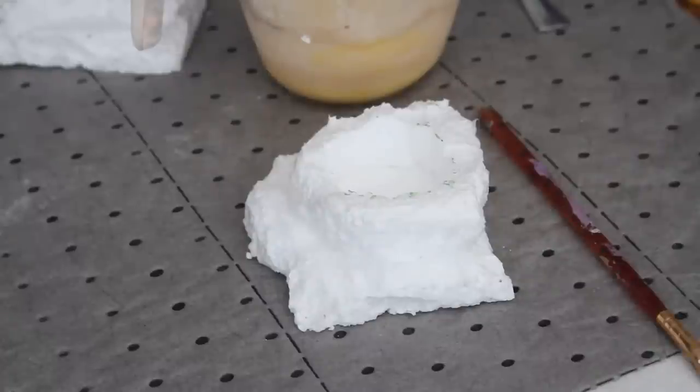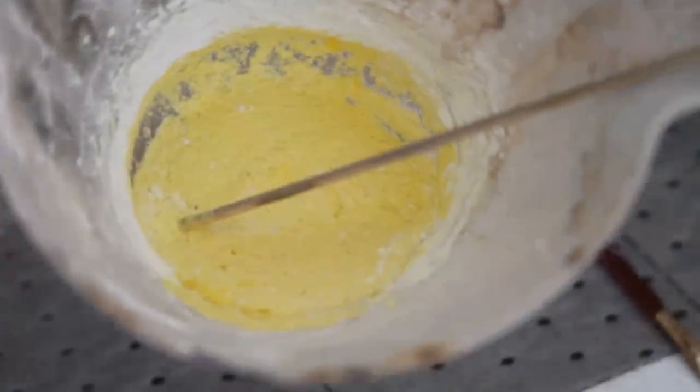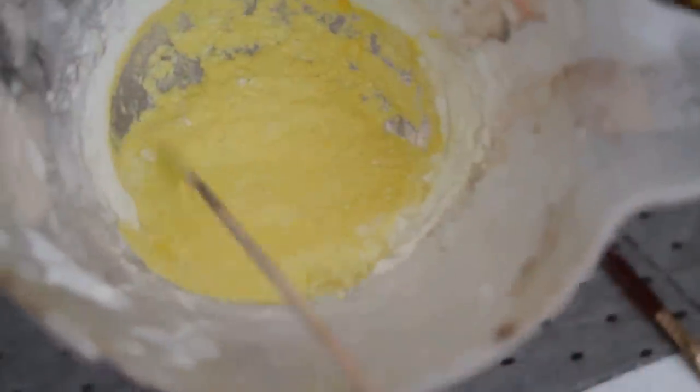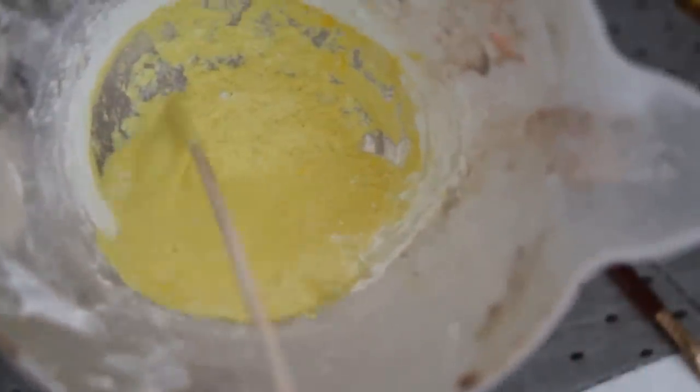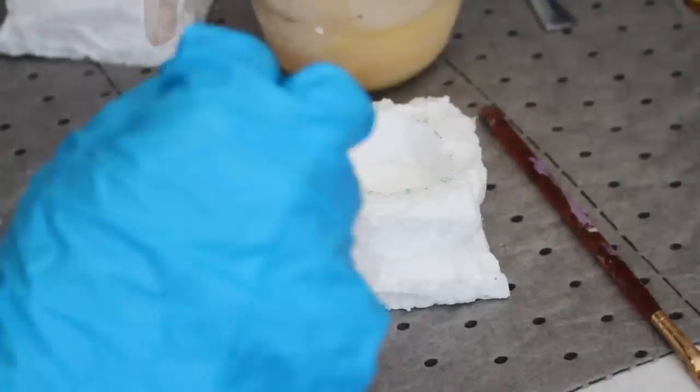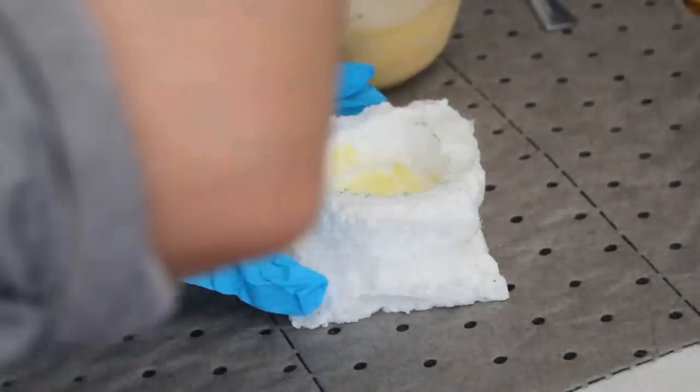Now for the grouting stage. For the first layer you want it to be quite thin, so I mixed grout with a lot of water and actually put a drop of acrylic paint in there just to help me see where I've already been.